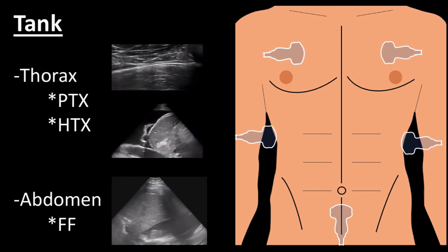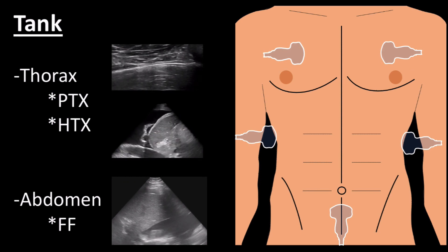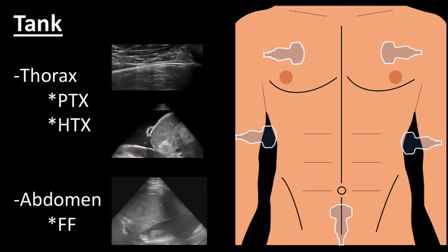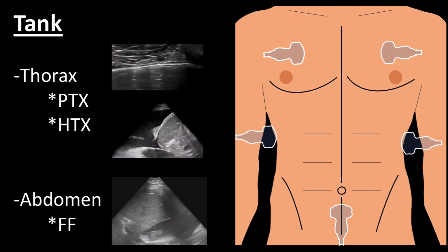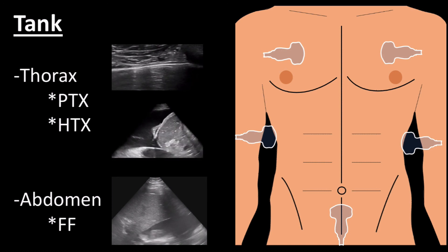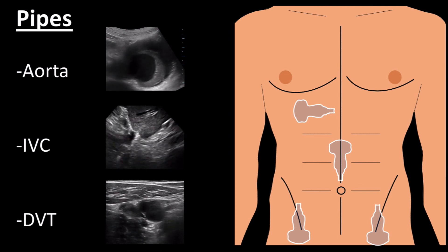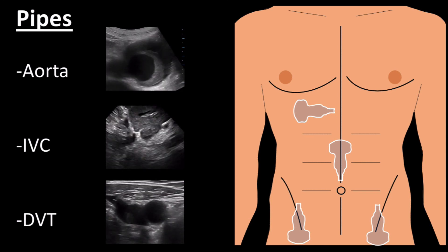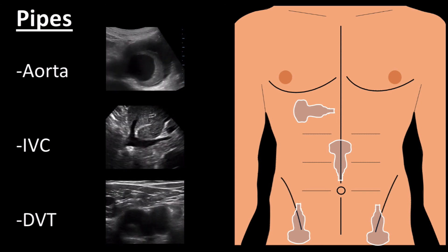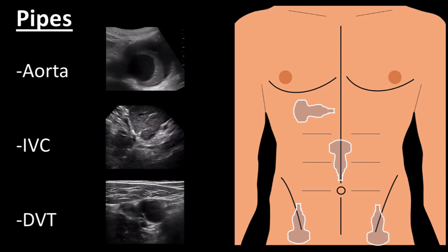The tank encompasses the two large body compartments where blood can collect: the thorax and the abdomen. This concept is essentially the EFAST examination. Evaluate the thorax by placing the probe anteriorly, looking for pneumothorax represented by a lack of lung sliding, and look for hemothorax by sliding the probe superiorly after obtaining hepatorenal and parasplenic views as part of the FAST exam. The abdominal views are the classic FAST views. Finally, the pipes — look at the aorta for signs of aneurysm or dissection, look at the IVC as a marker of volume status, and potentially evaluate the lower extremities for DVT if the cardiac exam is inconclusive or concerning for right heart strain.